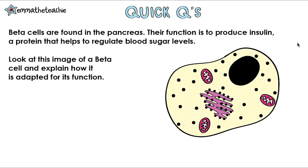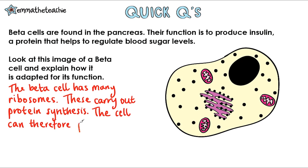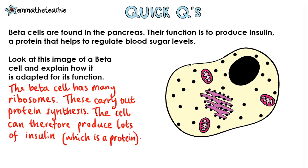Okay, let's have a go at a quick question. Read it, give the question a go in your head or on some paper, and press play to go through the answer. Beta cells are found in the pancreas. Their function is to produce insulin, a protein that helps to regulate blood sugar levels. Look at this image of a beta cell and explain how it is adapted for its function. Well, hopefully you spotted that the beta cell has many ribosomes — those are the little black dots. These carry out protein synthesis. The cell can therefore produce lots of insulin, which in the question we were told is a protein. So that's how you make your link between the two. How did you do?